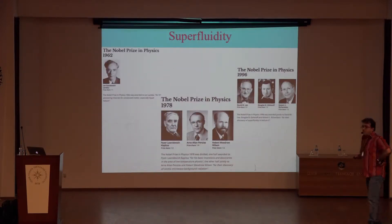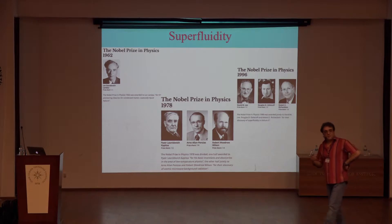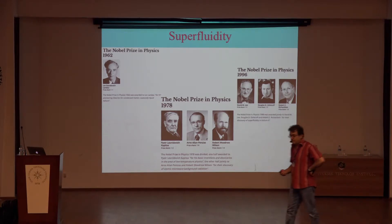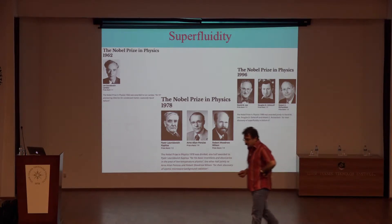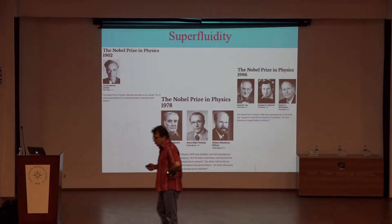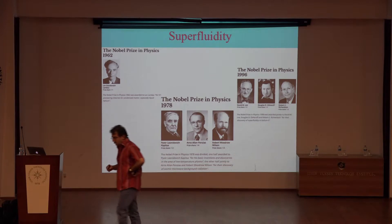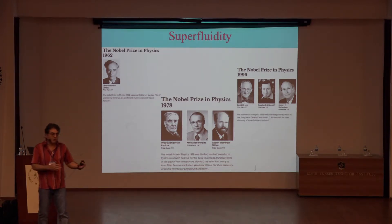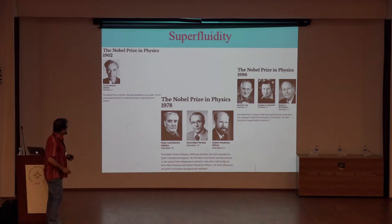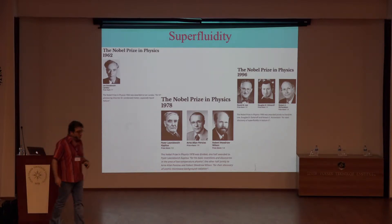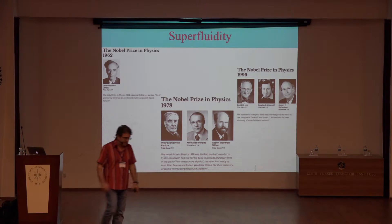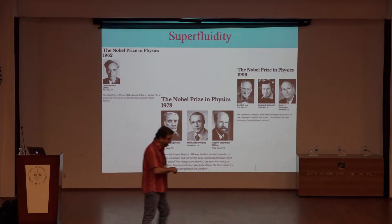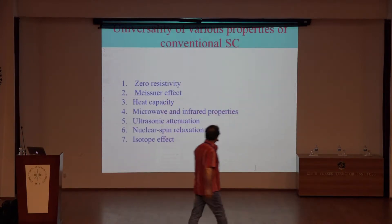In 2003, the Nobel Prize in physics was devoted to Abrikosov, Ginzburg, and Leggett for their contributions to the theoretical approach to superconductivity and superfluidity. Apart from superconductivity, superfluidity is also a very important related subject, and there are three Nobel Prizes given in these areas as well.